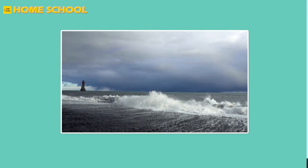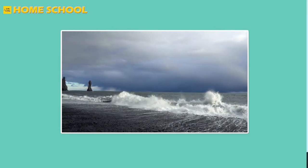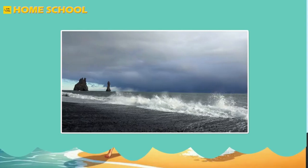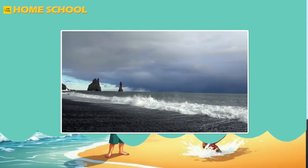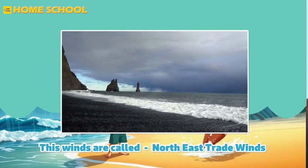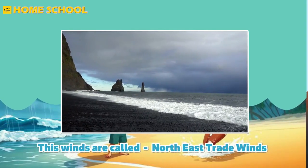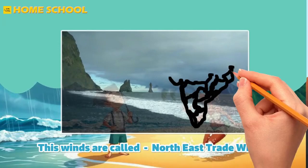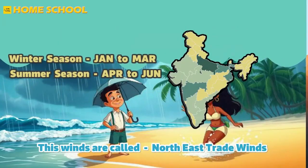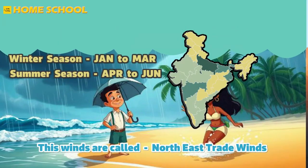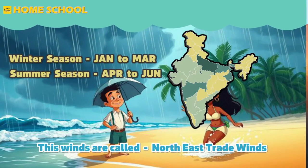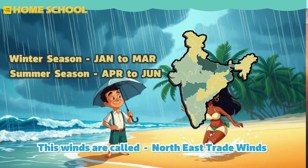Every year strong winds blow through the entire earth in certain definite patterns. These winds are called northeast trade winds. In the beginning of the year, India experiences winter season — that is January to March — and then summer season, that is April to June.